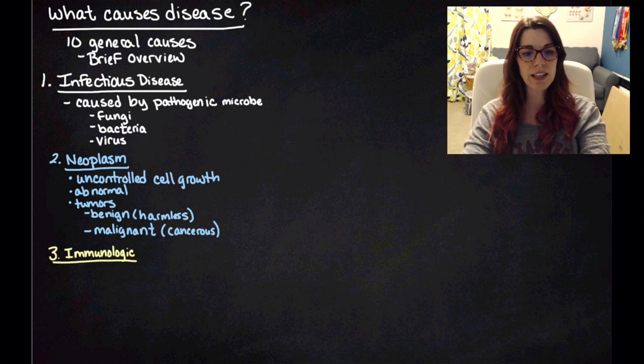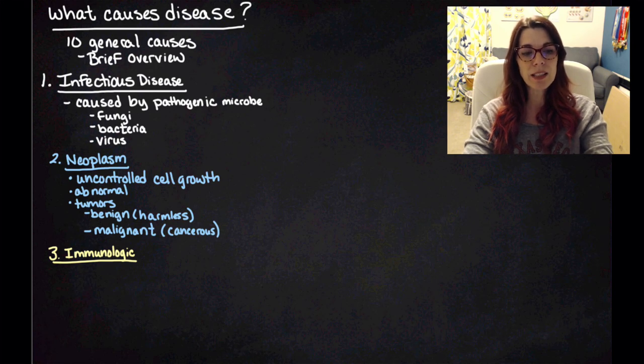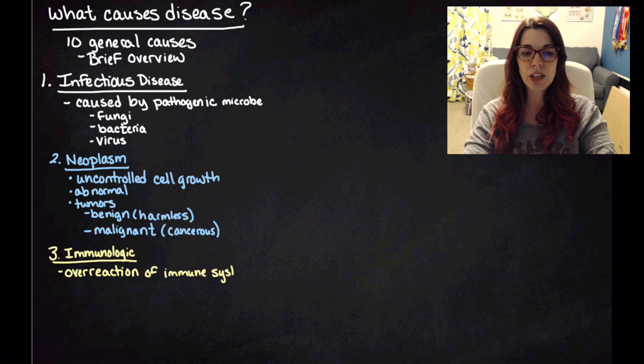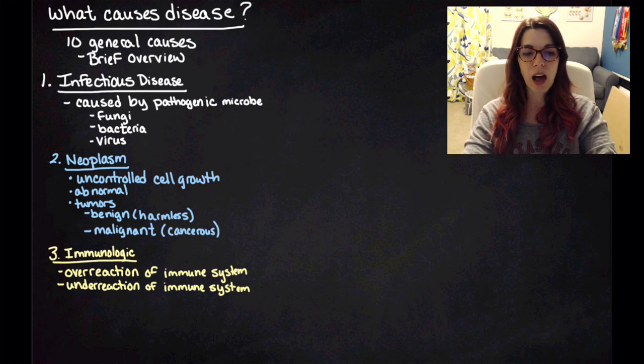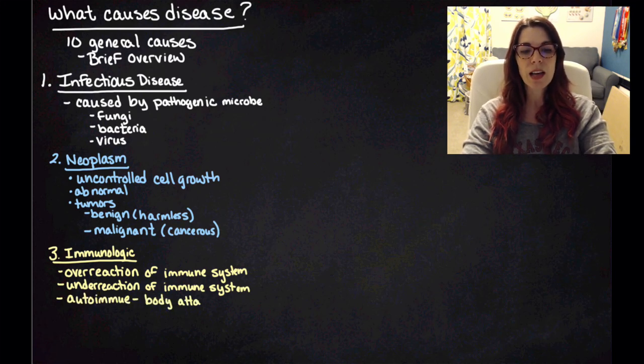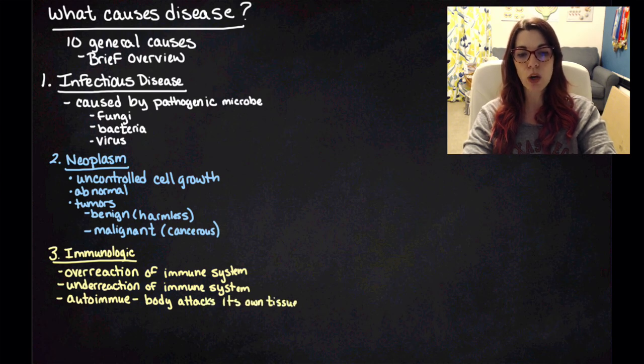Our third cause of disease is an immunologic disease. And those are caused by either an overreaction of the immune system or an underreaction of the immune system. And then the one that you hear about a lot these days are autoimmune diseases. And autoimmune diseases happen when the body attacks its own tissues.